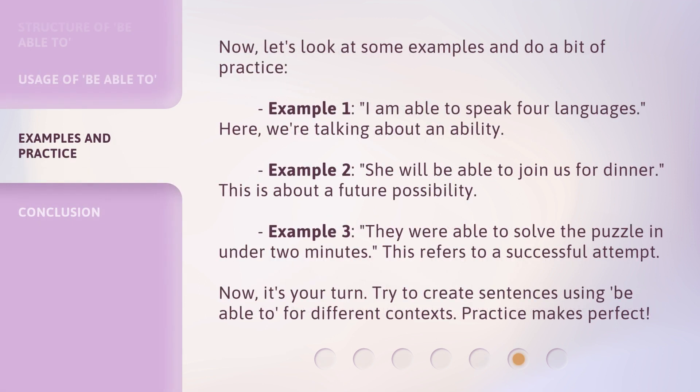Now let's look at some examples and do a bit of practice. Example 1: I am able to speak four languages — here we're talking about an ability. Example 2: She will be able to join us for dinner — this is about a future possibility. Example 3: They were able to solve the puzzle in under two minutes — this refers to a successful attempt. Now it's your turn. Try to create sentences using 'Be Able to' for different contexts. Practice makes perfect.